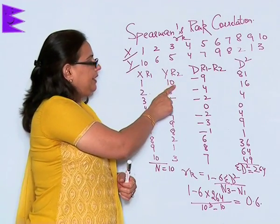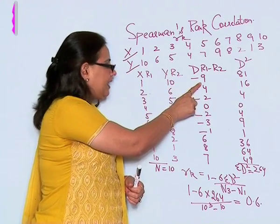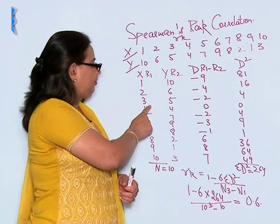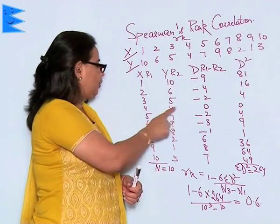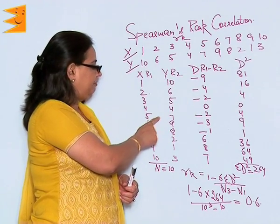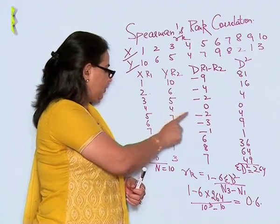So 1 minus 10 will give me minus 9, 2 minus 6 is minus 4, 3 minus 5 is minus 2, 4 minus 4 is 0, 5 minus 7 is minus 2.